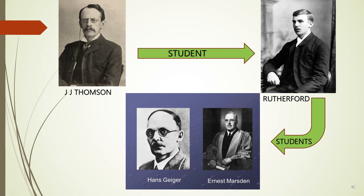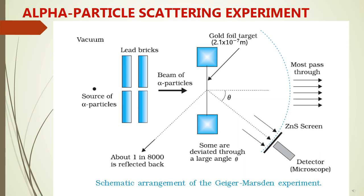Therefore, J.J. Thomson's student Rudolf Rutherford wanted to prove the atomic model with the help of his students Geiger and Marsden. So together, Geiger and Marsden, under the guidance of Rutherford, performed the alpha scattering experiment. This is also called Rutherford's experiment, Rutherford's alpha particle scattering experiment, or the Geiger-Marsden experiment.